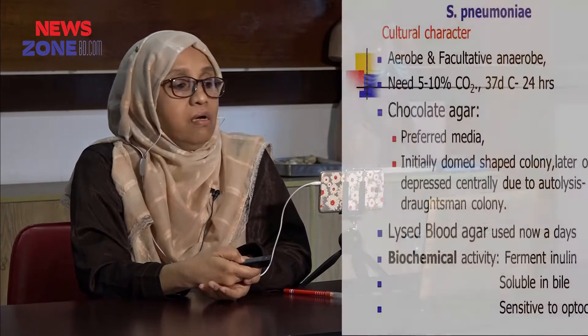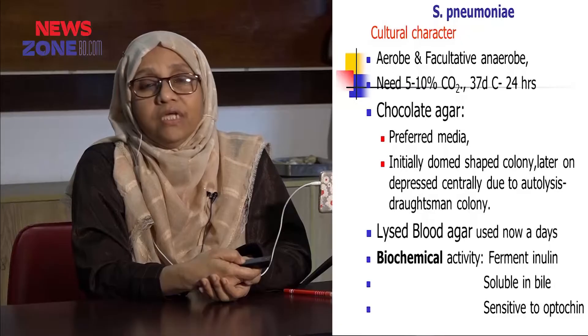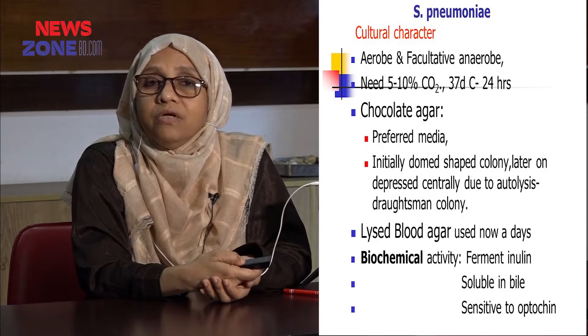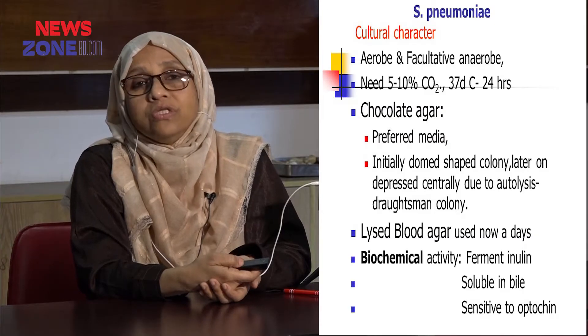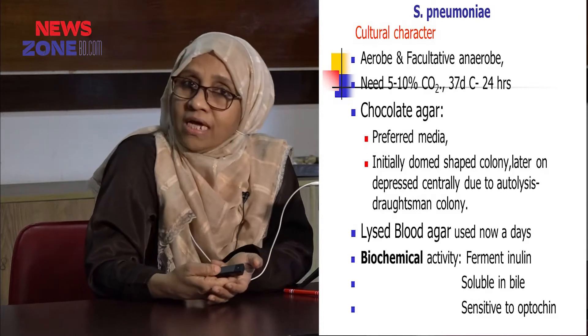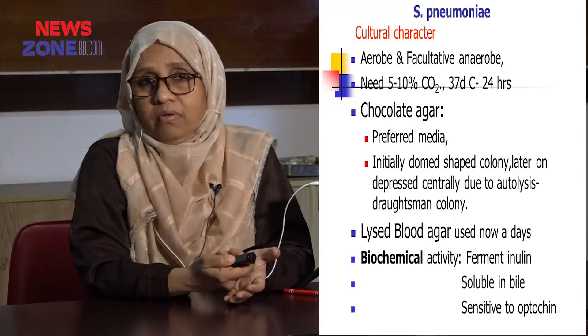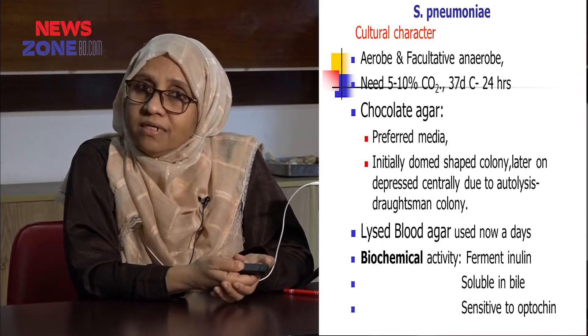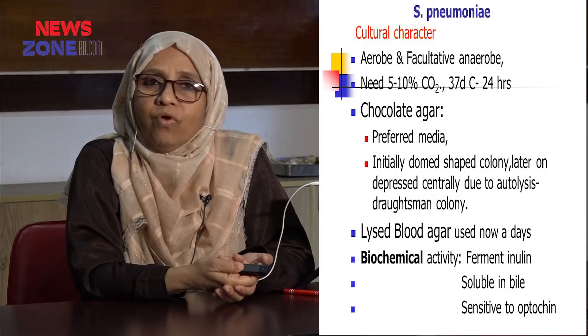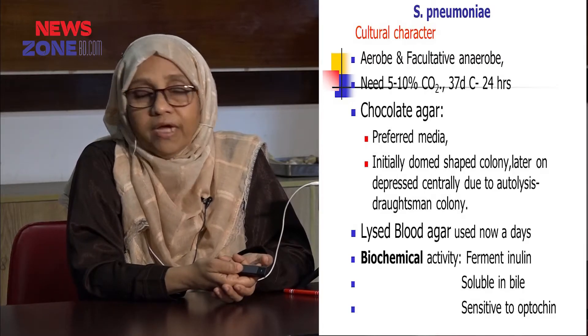The growth will initially be a dome-shaped colony on chocolate agar media, and later on there will be a depressed centre due to the autolysis of Streptococcus pneumoniae, which is called the Draughtsman colony. Streptococcus pneumoniae produces autolytic enzymes that cause this autolysis, starting from the centre, making the colony a Draughtsman type — very typical and once anyone sees it, they will never forget it.